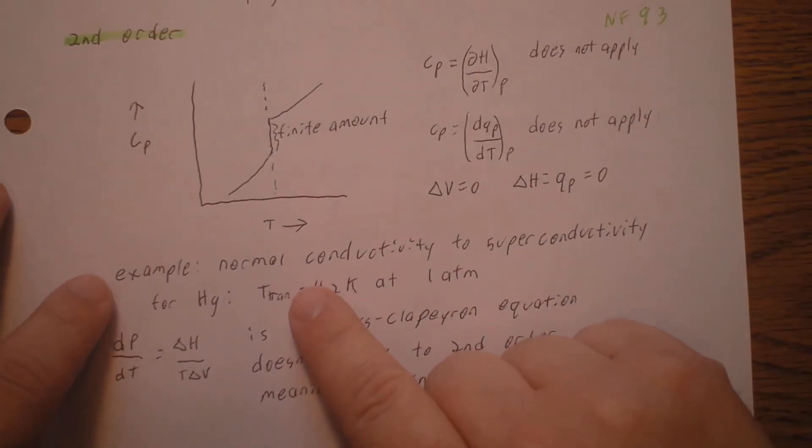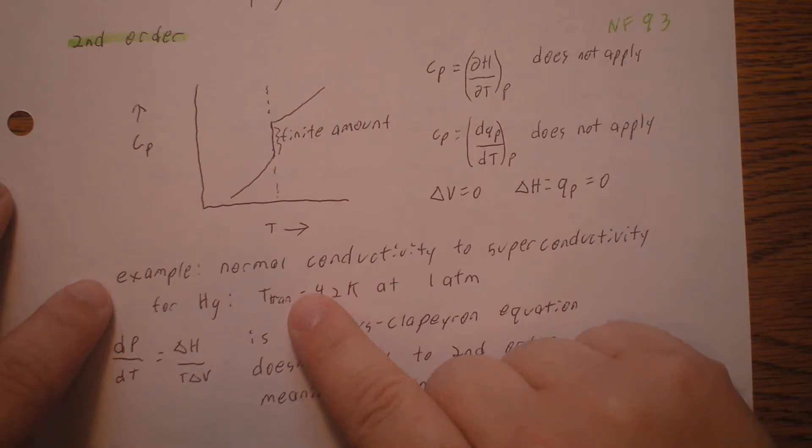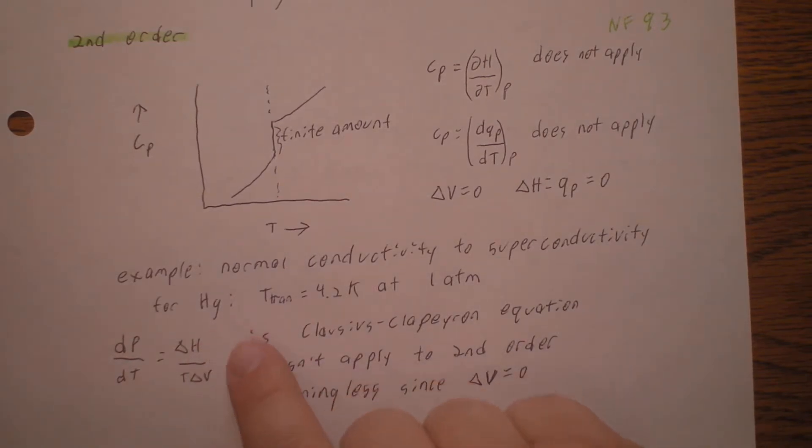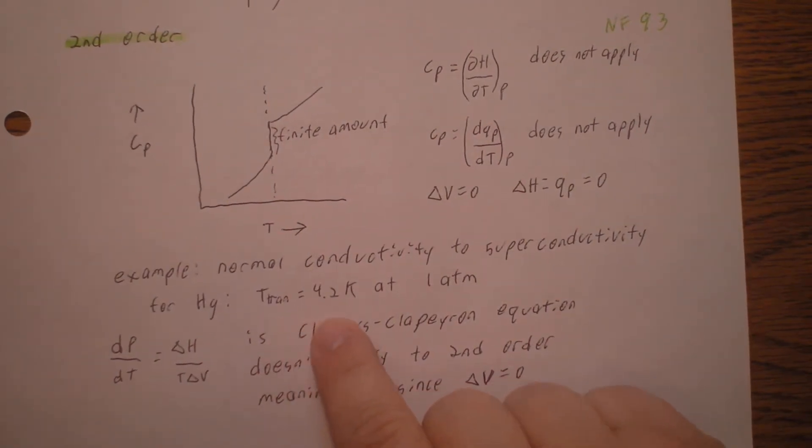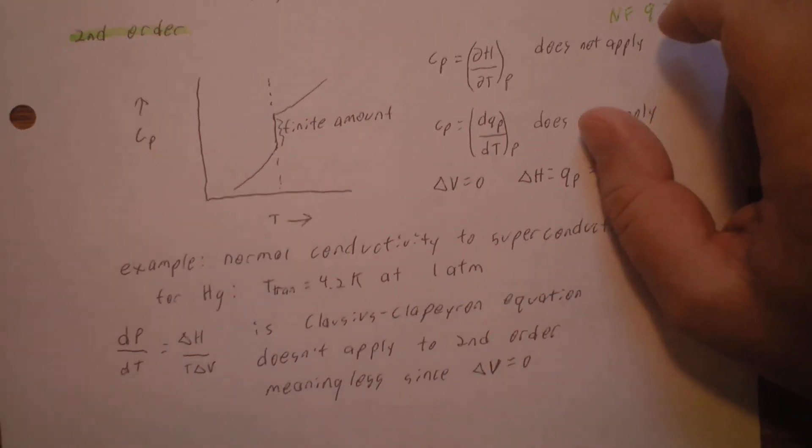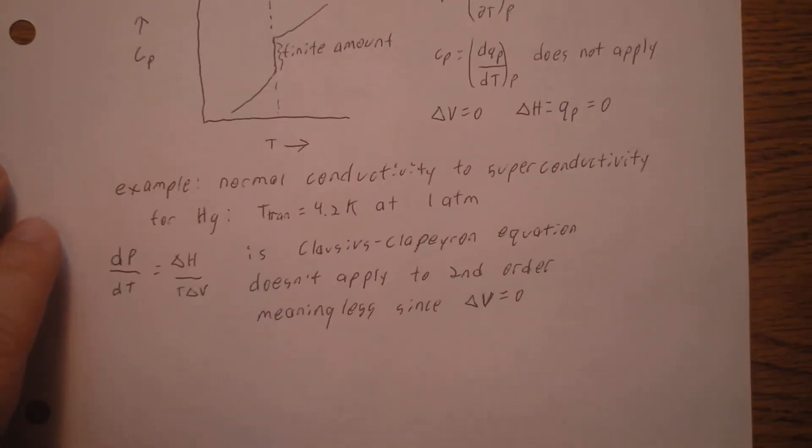For example, let's say we have a solid metal that's normally conductive, and then we make it a superconductor. For mercury, that transition temperature is 4.2 kelvins at one atmosphere. So that would be a second order transition.